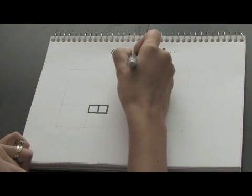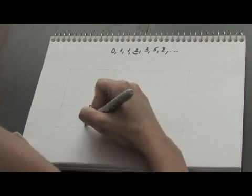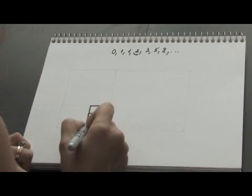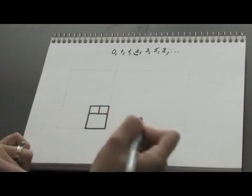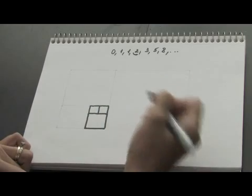Then the next number is two. So I draw the square under my first two squares with two by two units in measure.